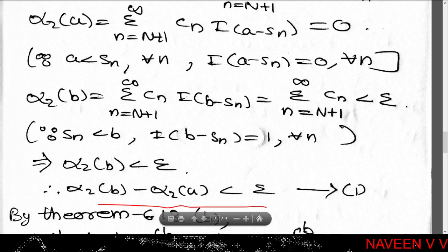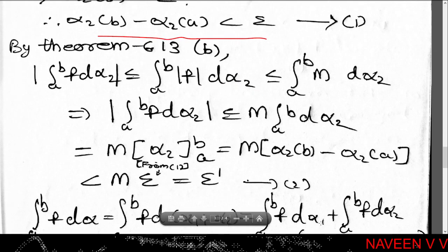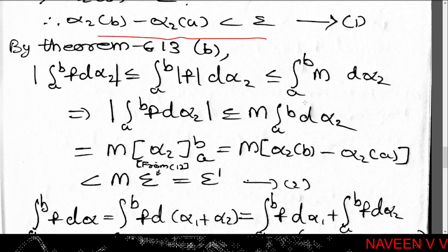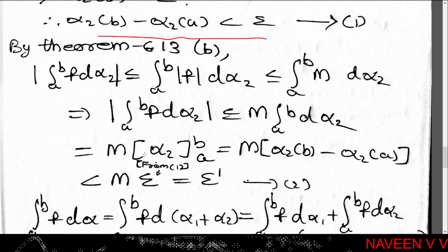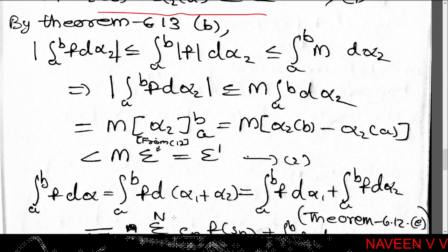By theorem 6.13 part (b), since f is continuous on [a,b] and α is monotonically increasing, f ∈ R(α) on [a,b]. Applying theorem 6.13 part (b), f ∈ R(α₂) on [a,b]. Then |∫(a to b) f dα₂| ≤ ∫(a to b) |f| dα₂ ≤ ∫(a to b) M dα₂ = M · (α₂(b) - α₂(a)). Since α₂(b) - α₂(a) < ε, we have |∫(a to b) f dα₂| ≤ M · (α₂(b) - α₂(a)).